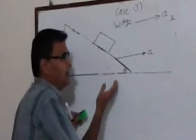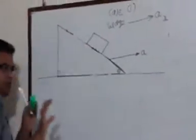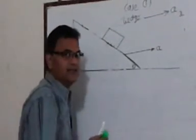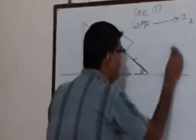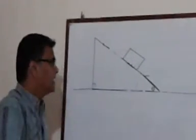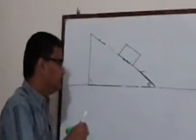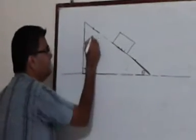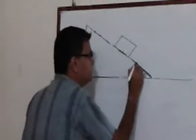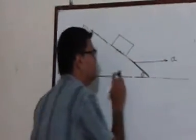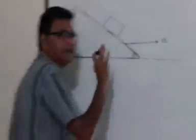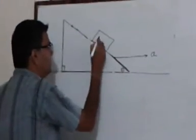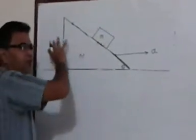You can do this experiment at home. If you push the wedge with enough force, at one particular value of force the block will remain stationary on the wedge. Let us understand how this happens — and here comes the concept of a pseudo-force. Consider a situation where acceleration is given to the wedge such that the block remains stationary and does not move. That means the small block as well as the wedge are both moving with the same acceleration.